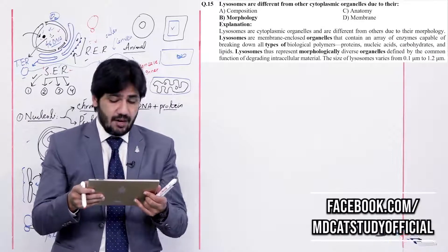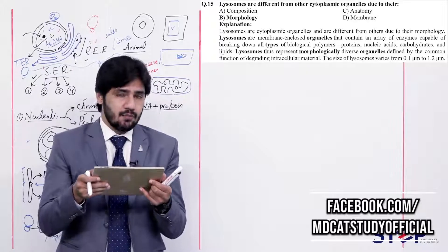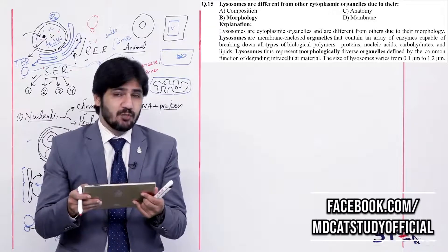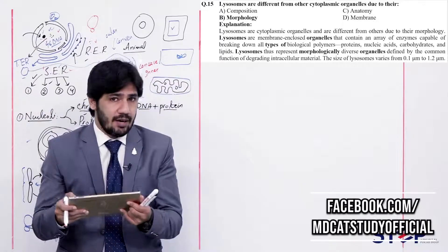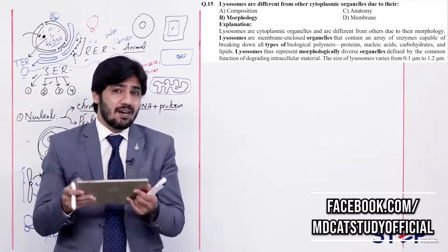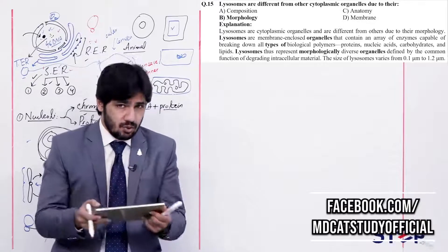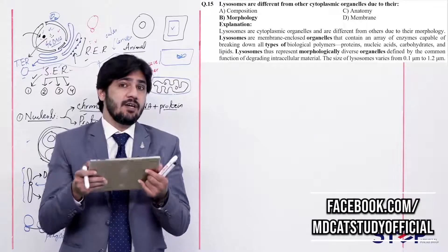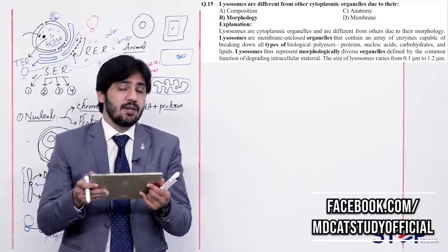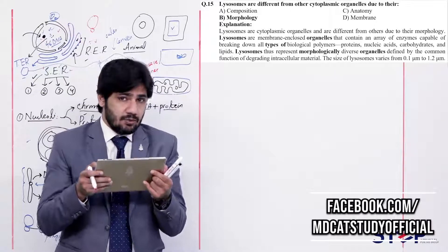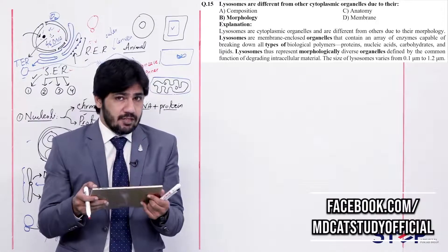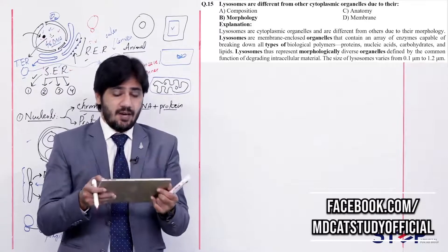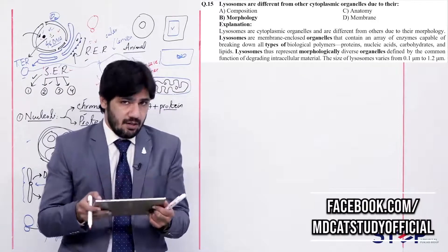Question 15: Lysosomes are different from other cytoplasmic organelles due to their (alpha) composition, (beta) morphology, (charlie) anatomy, (delta) membrane. Lysosomes and other organelles share similar membrane composition (phospholipid bilayer) and anatomy. The difference lies in morphology — different organelles have equal size, but lysosomes vary greatly in size from 0.12 up to 1.2 micrometers. So the right answer is beta — morphology. Question 16: Who isolated the lysosome for the first time? (alpha) Pallade, (beta) Golgi, (charlie) Brown, (delta) De Duve. De Duve first isolated the lysosome. So the right answer is delta.